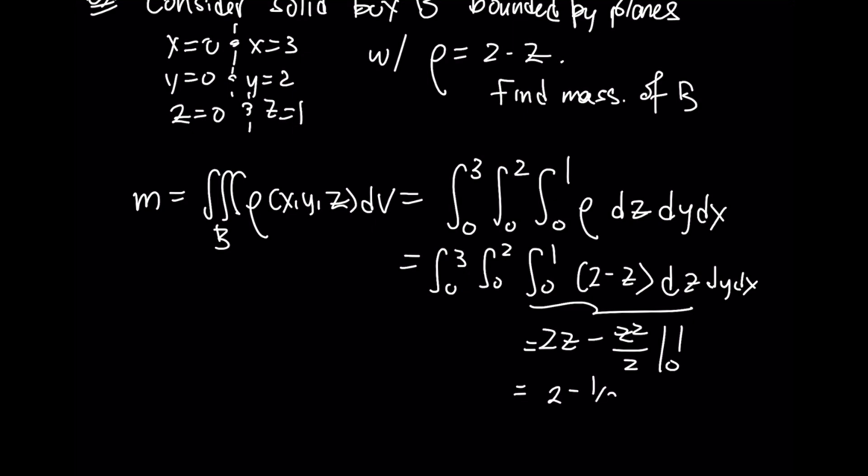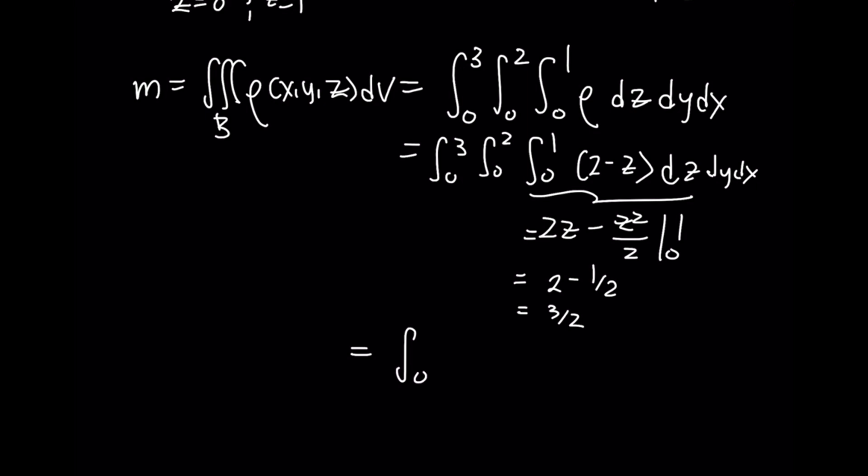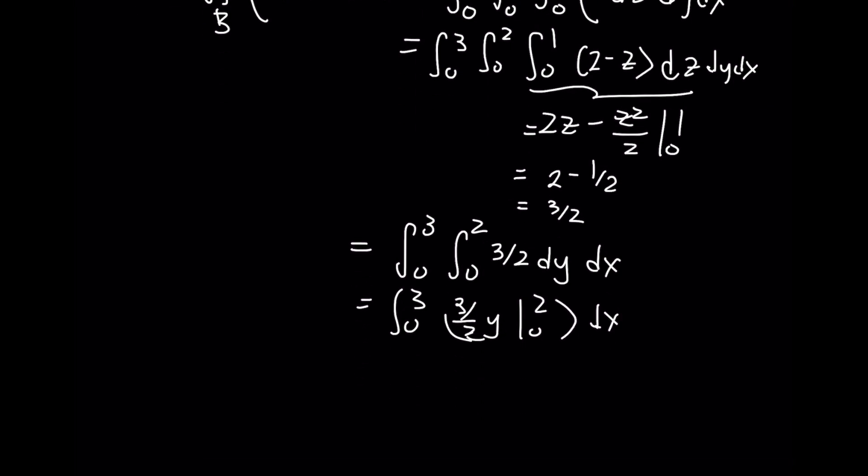Simply going to be 2 minus 1 half, which is 3 halves. So then the mass becomes an integral 0 to 3, 0 to 2 of 3 halves dy dx, which is an integral of 3 halves y evaluated from 0 to 2 dx. This is simply 3 dx, which ends up producing a 9. So the mass of this object would be 9 kilograms.